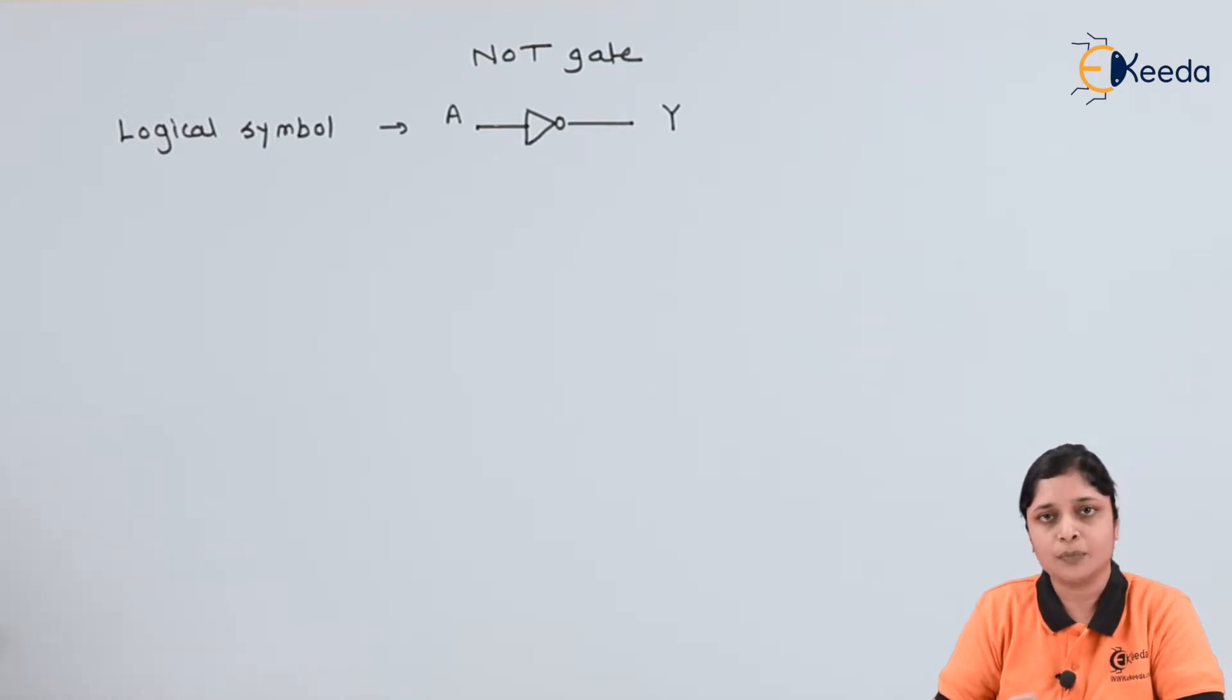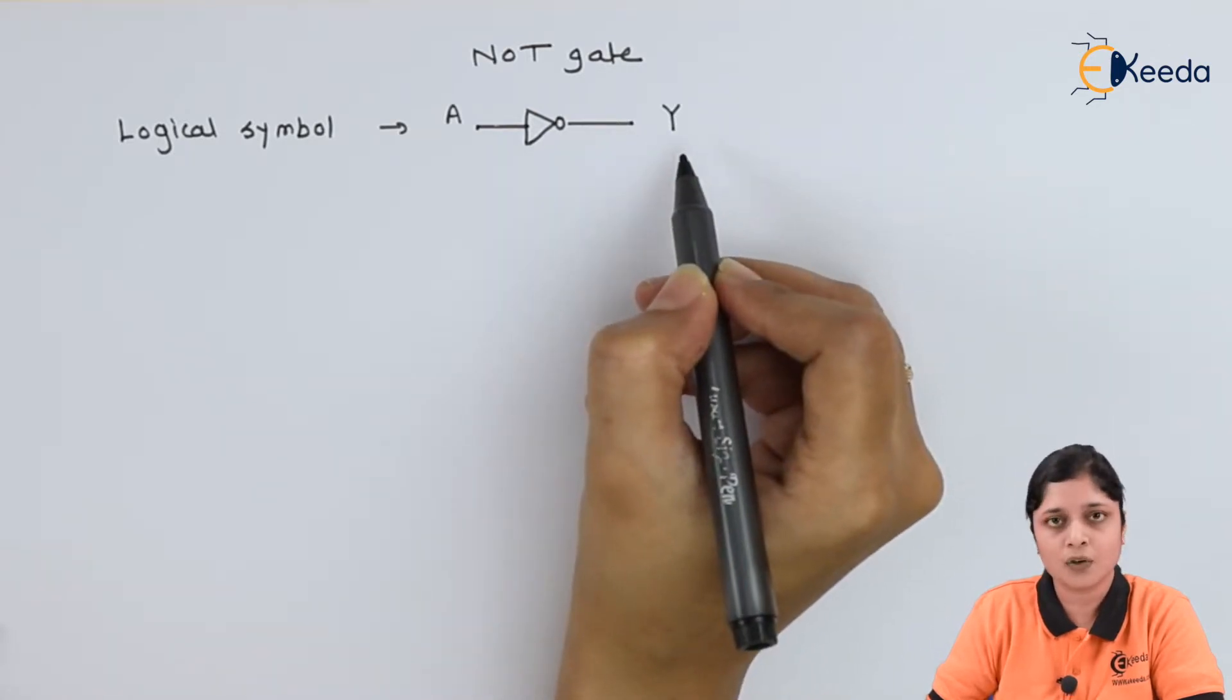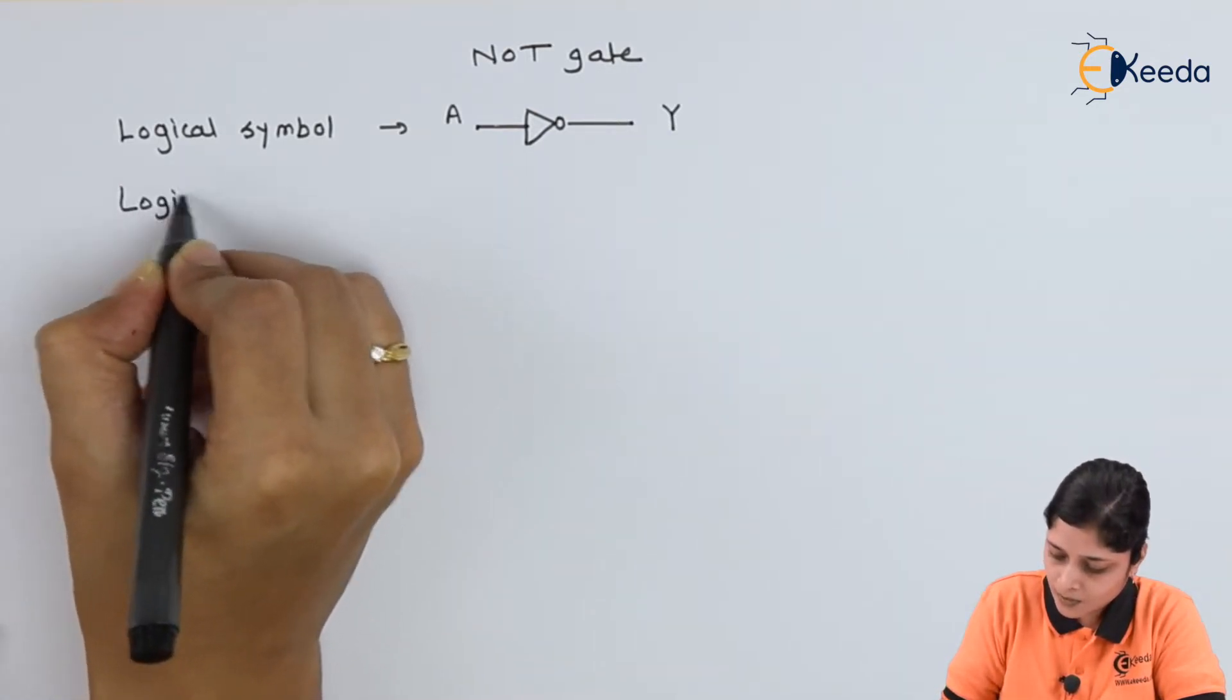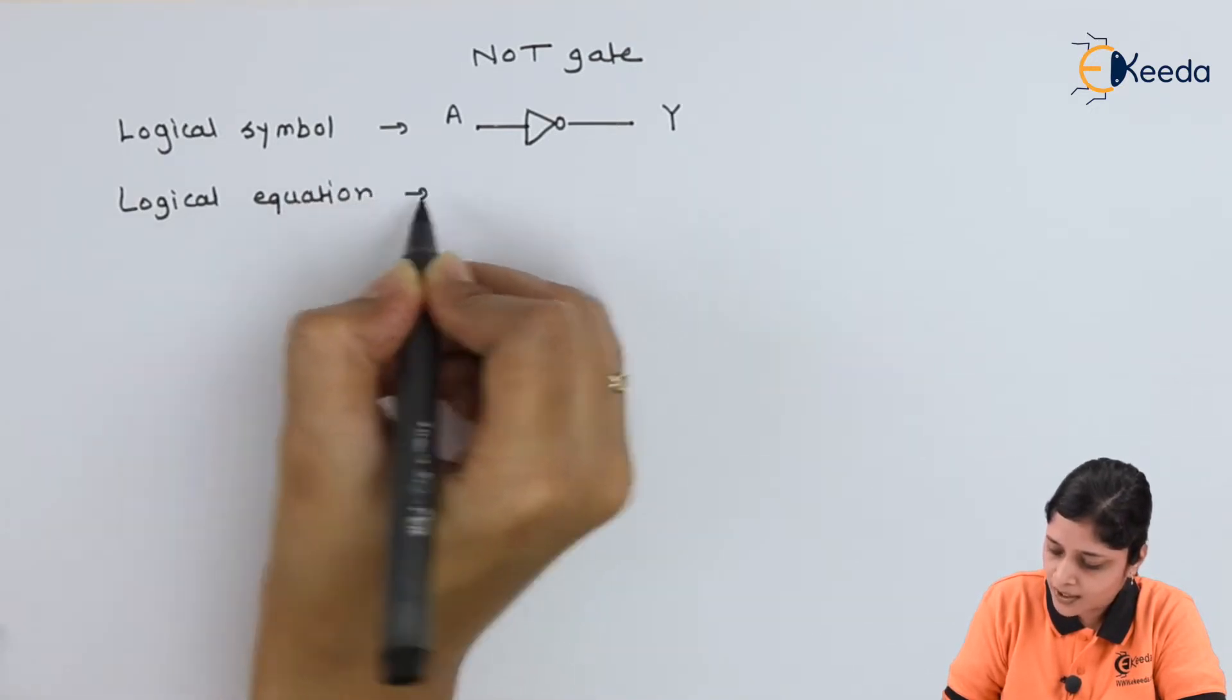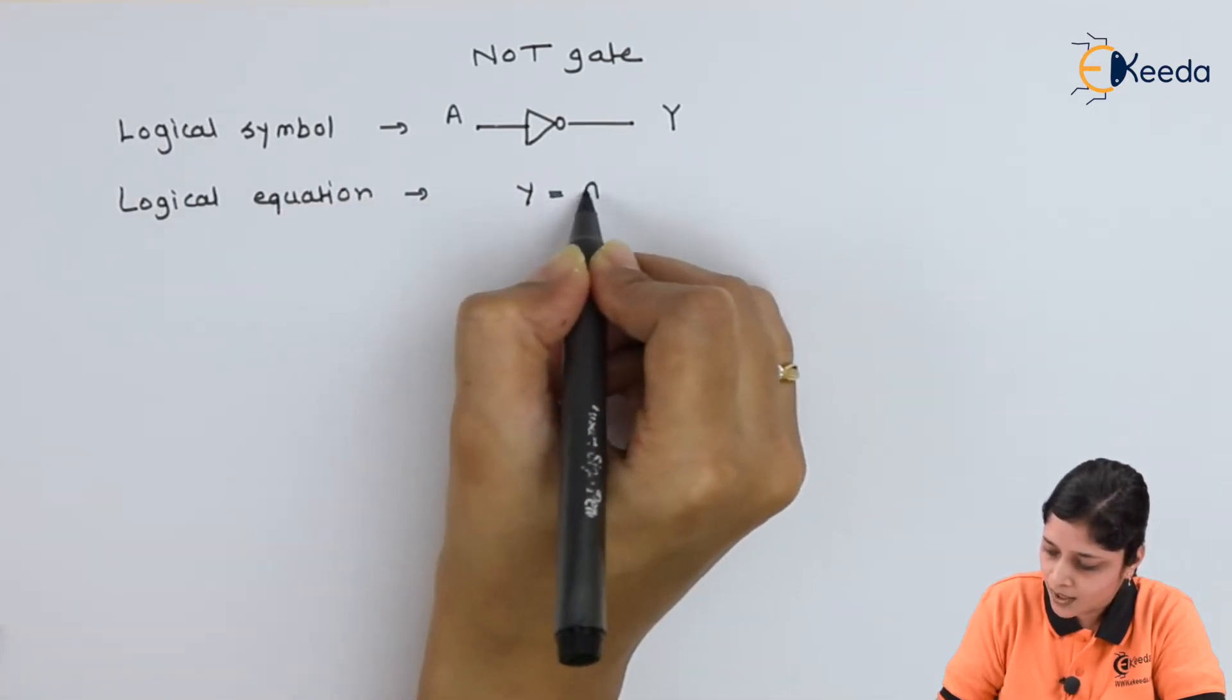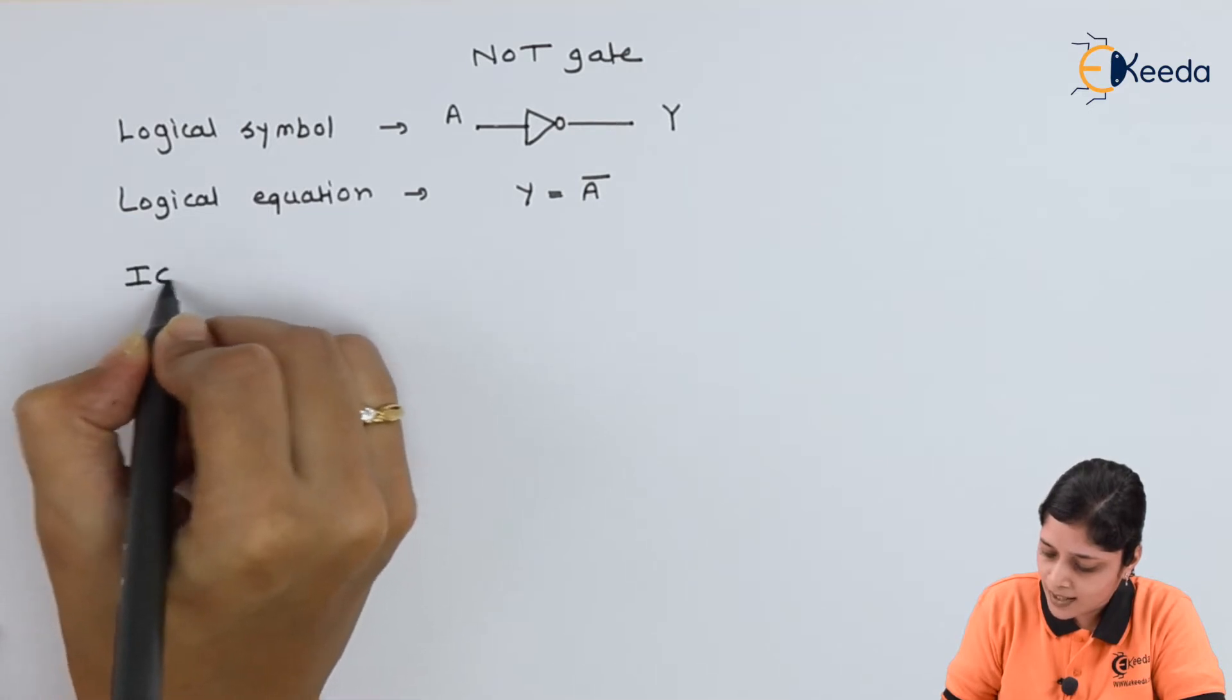A is the input side, Y is the output side. Logical equation for NOT gate: Y equals to A bar. You can say A complement also. Now IC number for NOT gate is 7404.